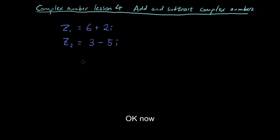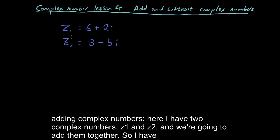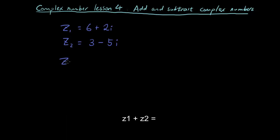OK, now adding complex numbers. Here I have two complex numbers, z1 and z2, and we're going to add them together. So I have z1 plus z2 equals. And then all you have to do is substitute the complex numbers in the place of these variables. So I'm going to put 6 plus 2i where z1 is. And then I'm going to put 3 minus 5i where z2 is.